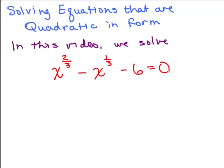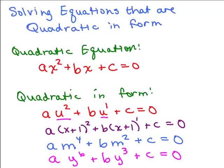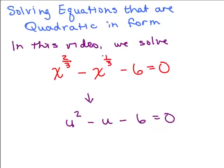We're going to solve an equation that's quadratic in form. We want to make it look like a standard quadratic by using the exponents. If we look at the exponents, we have 1/3 for the middle term and 2/3 for the first term. The first exponent is twice as big — 2 times 1/3 is 2/3. So that's going to be our strategy here.